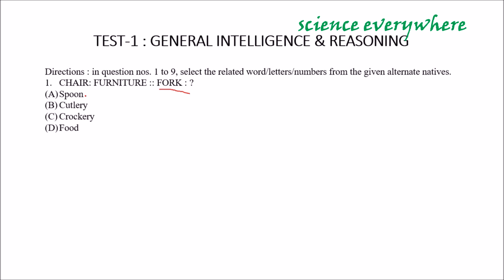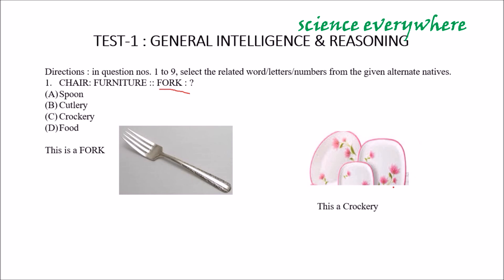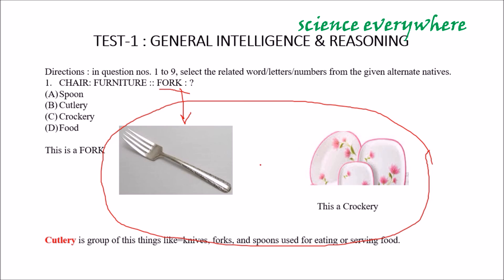So spoon cannot be a family, it serves like an individual. Cutlery can be a family because cutlery is a combination of Fork, spoon, dishes, etc. which are used in serving foods or eating food. Crockery is similar as plate or dishes. Food is not related at all. Cutlery is a group of things like knives, forks, spoons used for eating or serving food. So the correct option will be cutlery.